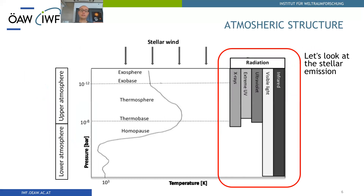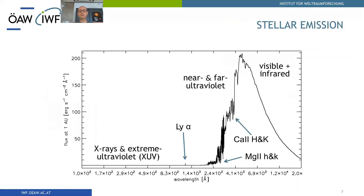Now let's take a look at the stellar emission because this drives the escape. This is the spectral energy distribution for the Sun at low and high energy. We have the X-rays and extreme ultraviolet, together called XUV. Then we have the near and far ultraviolet, and then the optical and infrared. In the ultraviolet, the main features are the Lyman alpha line in the far UV, and then the magnesium II H and K resonance lines and the calcium II H and K lines in the near ultraviolet and blue part of the optical region respectively.